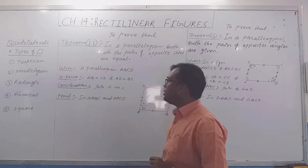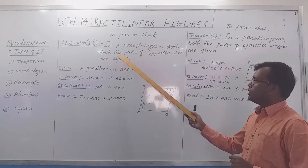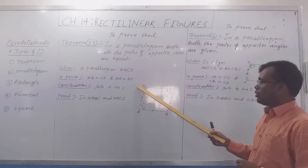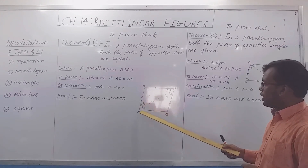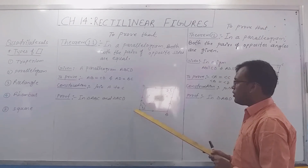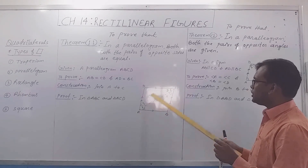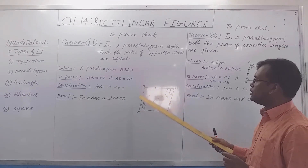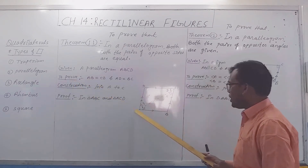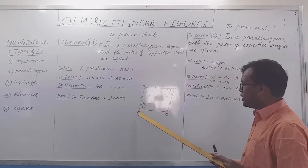After that, start theorem number 11. Theorem number 11 is to prove that in a parallelogram, both pairs of opposite sides are equal. We have to prove this for parallelogram ABCD. If ABCD is a parallelogram, then opposite sides will be parallel. Given: parallelogram ABCD. To prove: AB equal to CD and AD equal to BC. Construction: join A to C.